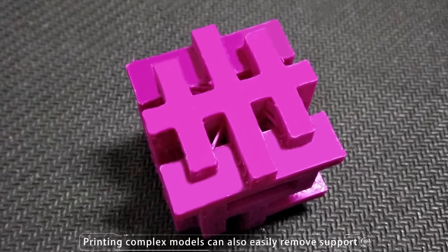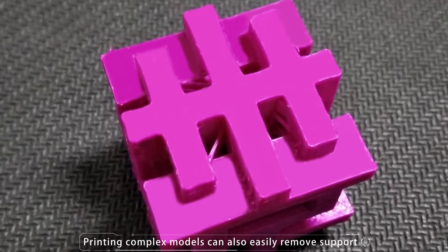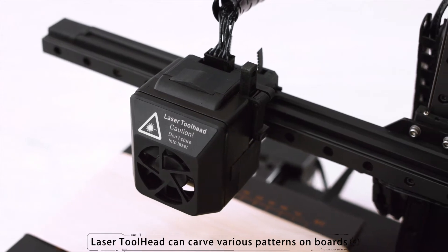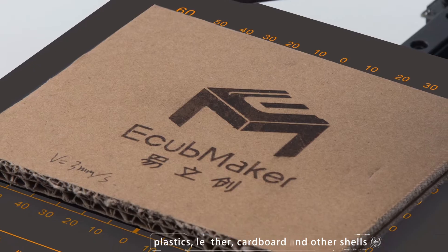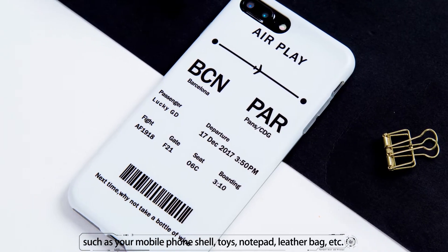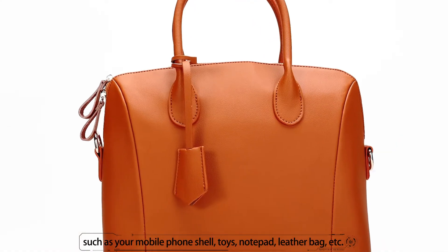Printing complex models can also easily remove support. Laser toolhead can carve various patterns on boards, plastics, leather, cardboard, and other shells, such as your mobile phone shell, toys, notepad, leather bag, etc.